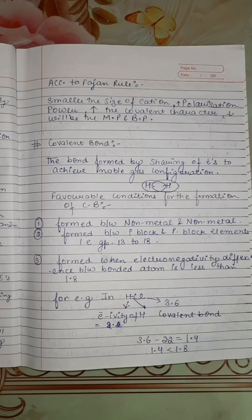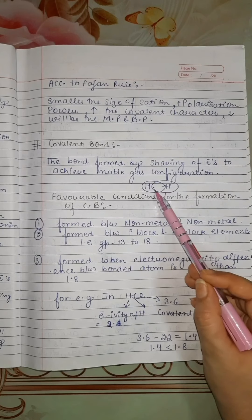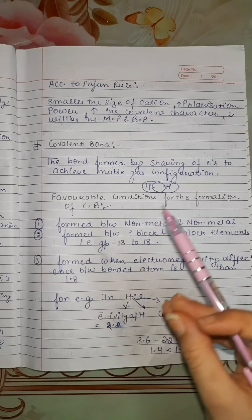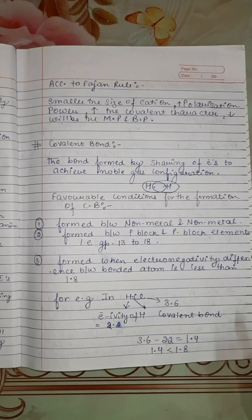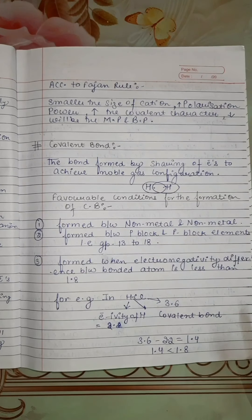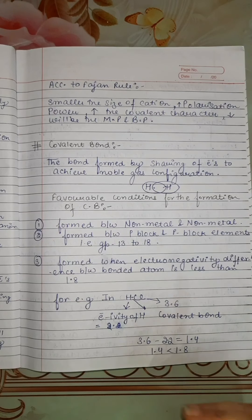Good morning all. Today let's start our class with the topic covalent bond. Covalent bond is the bond formed by the sharing of electrons to achieve noble gas configuration.